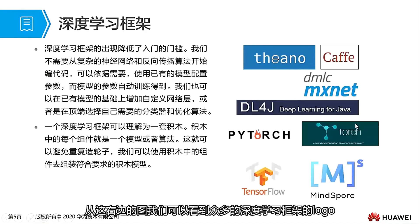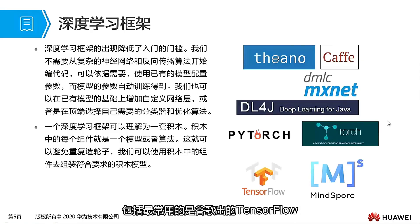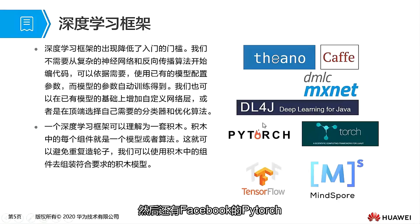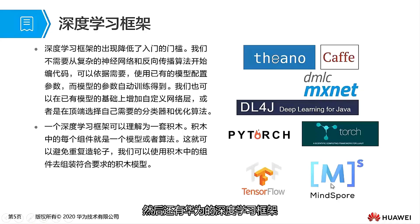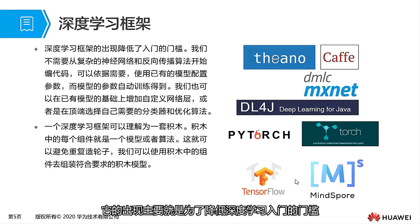From the right side of the figure, we can see the logos of many deep learning frameworks, including the most commonly used TensorFlow by Google and PyTorch by Facebook. This also includes CAFE, Caiano, MXNet, and Huawei's deep learning framework called MindSpore. These deep learning frameworks primarily appear to lower the entry barrier into deep learning.